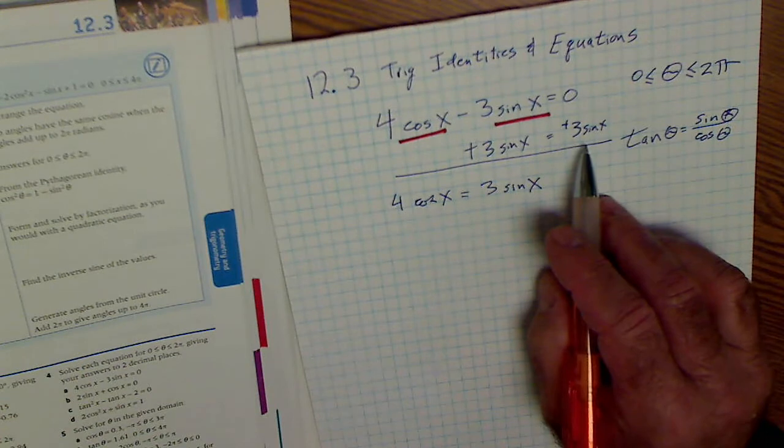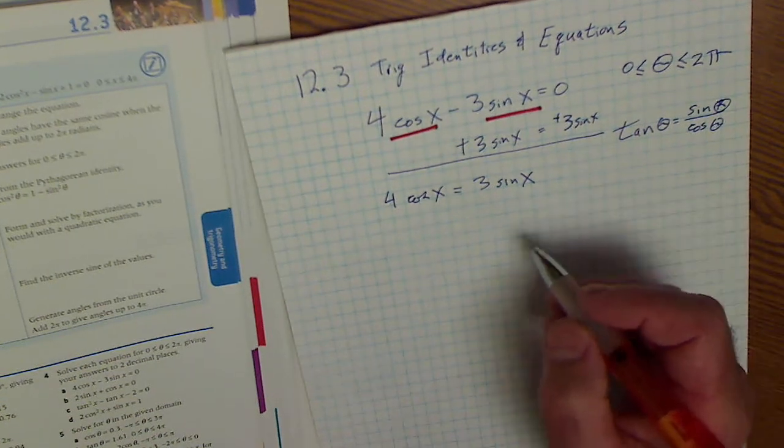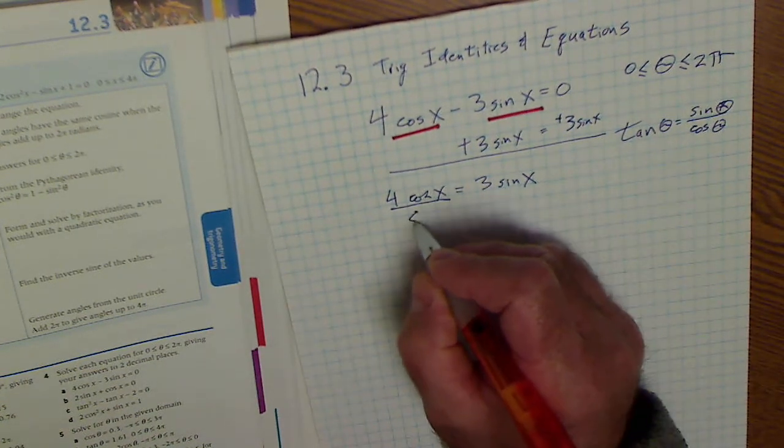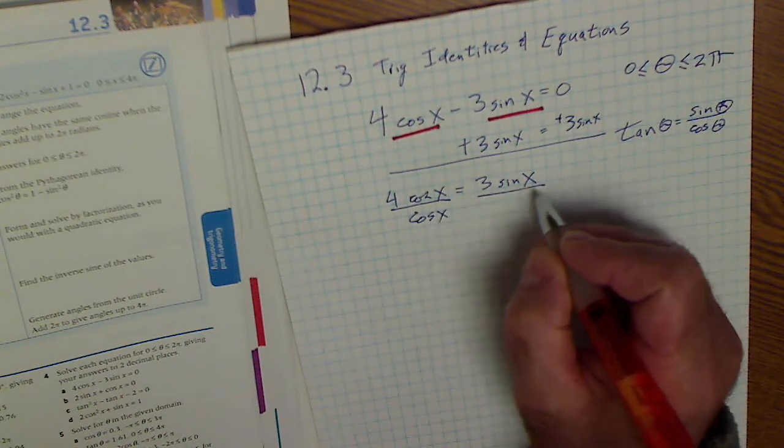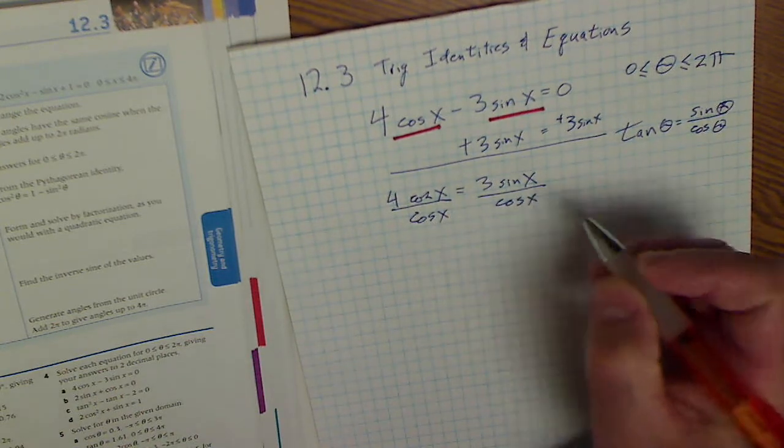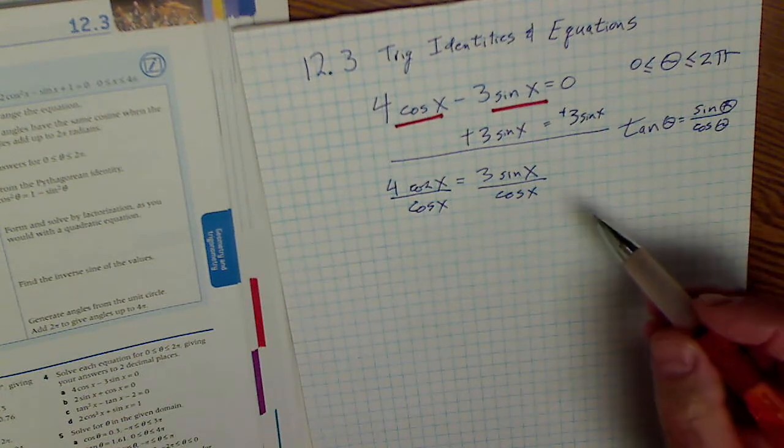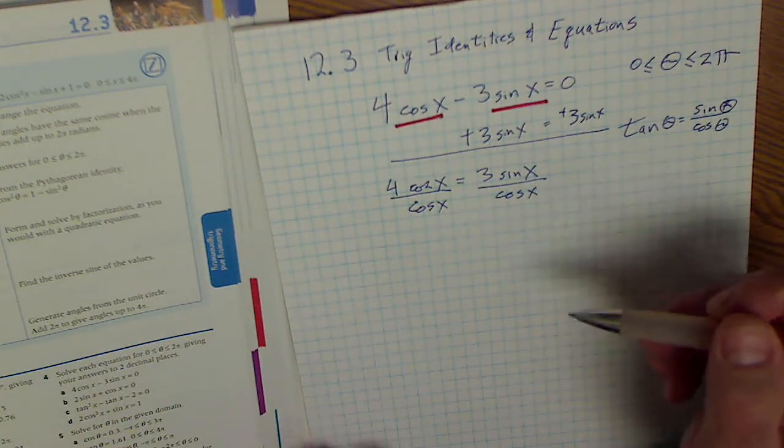I added 3 sine of x to both sides. I'm going to divide both sides by cosine of x. There's no addition subtraction signs, so I can divide cleanly like this. And then additionally I'm going to divide both sides by 3.